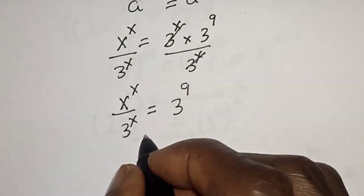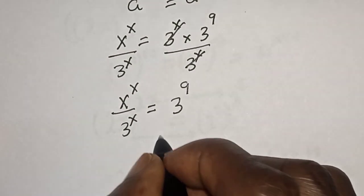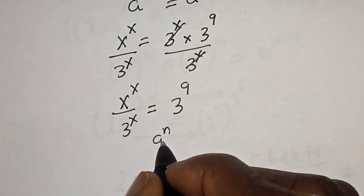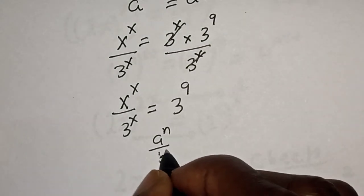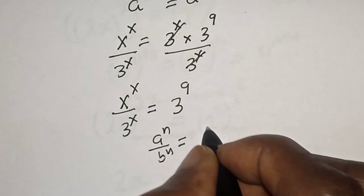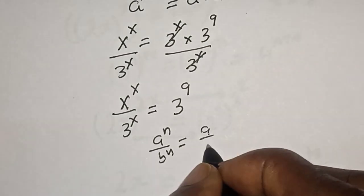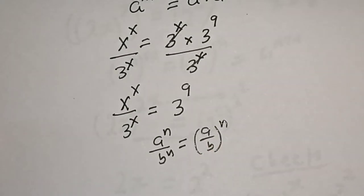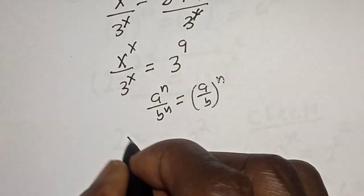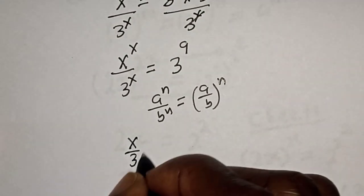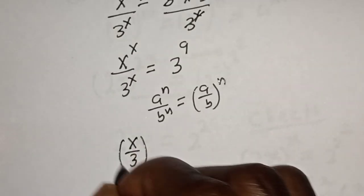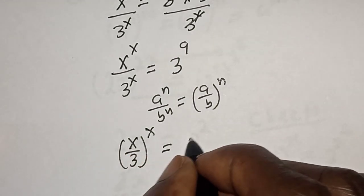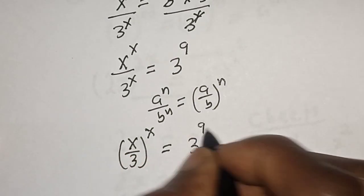Take note also that A to the power of N over B to the power of N equals (A/B) to the power of N. Applying this, we get S over 3, all to the power of S, is equal to 3 to the power of 9.